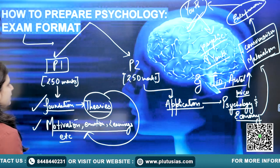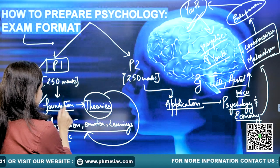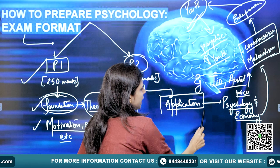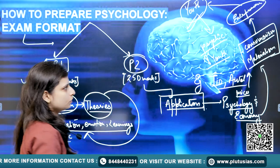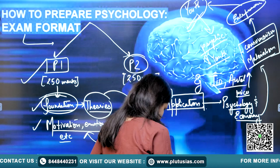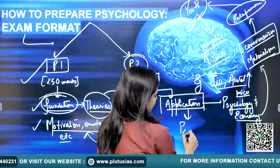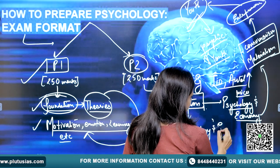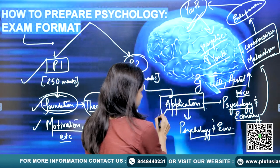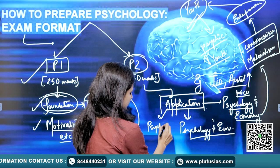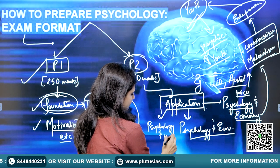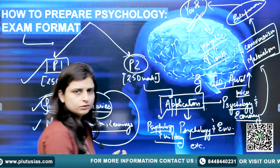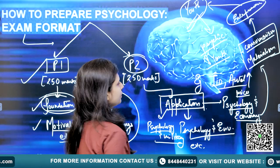So basically, in paper one you understand the subject and get the foundation, while in paper two you apply whatever you understood in paper one. I told you about psychology and economy. Other than that, there is psychology and environment, and psychology and military — multiple aspects. Just a few of them to explain the subject.